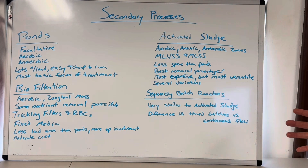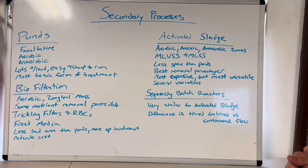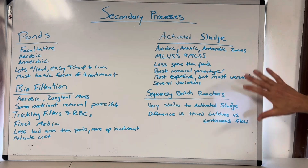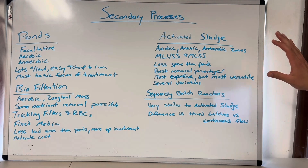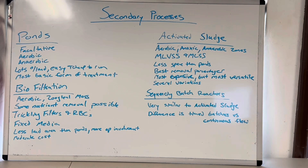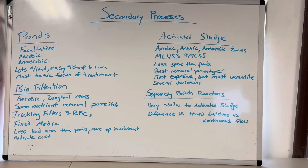There are also different flow configurations for how wastewater enters the basin: step feed, complete mix, and plug flow. This is advanced content for grade threes, fours, fives, and class B's and A's — grades one and two don't need to know all of that. You do need to know about oxidation ditches and extended aeration. Contact stabilization and reaeration didn't show up until around my grade four exam. There are several variations of activated sludge.